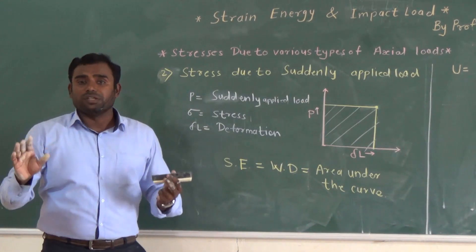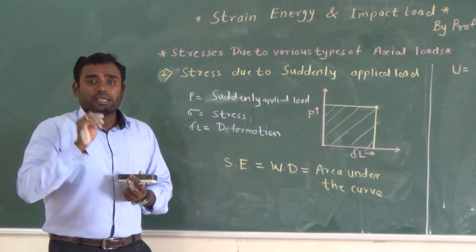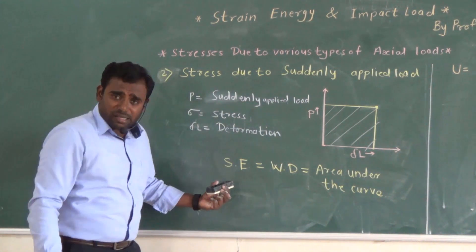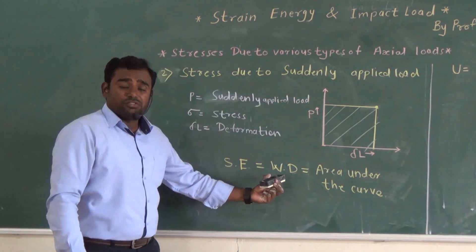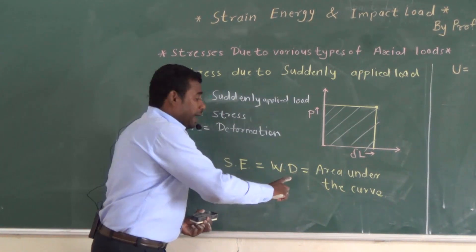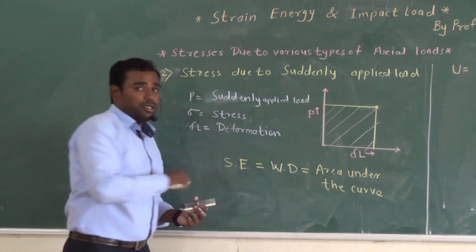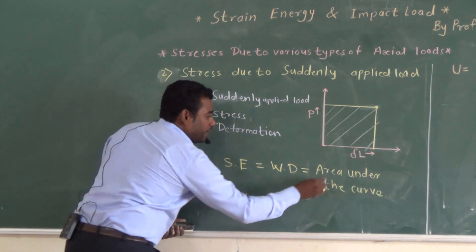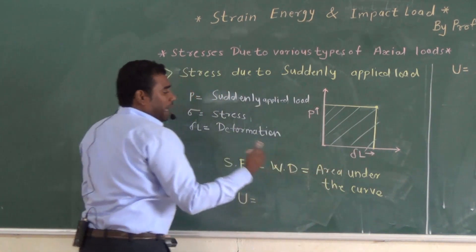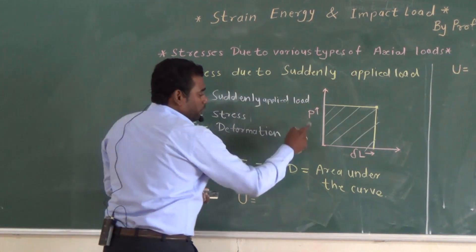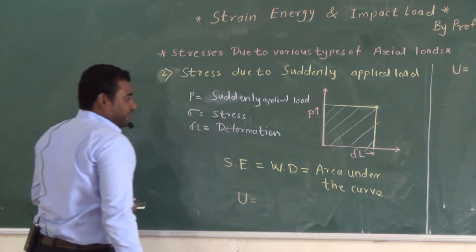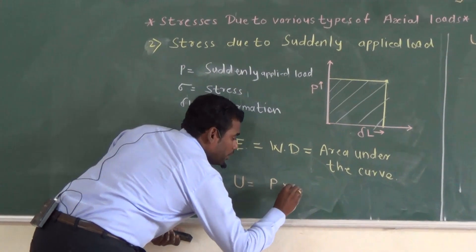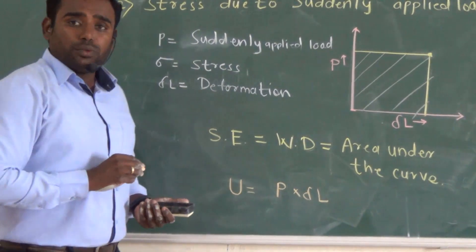Now, the same governing equation which we used for the case of gradually applied load — I am using the same equation. That is: strain energy (SE) is equal to work done (WD). Work done is equal to the area under the curve. So, work done is equal to the area under the curve. Since the graph is a rectangle, the area is the multiplication of the two sides: U is equal to P into delta.